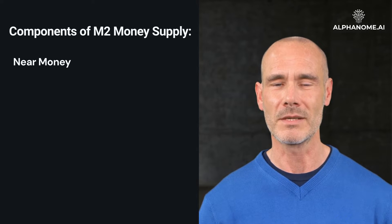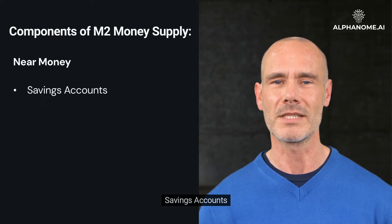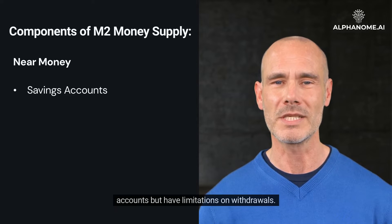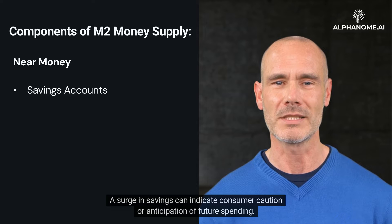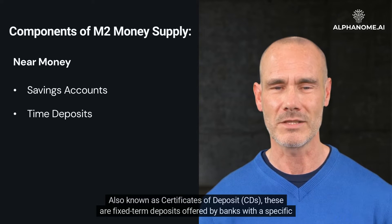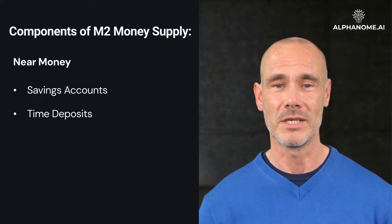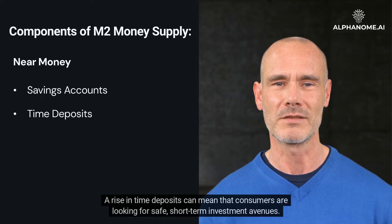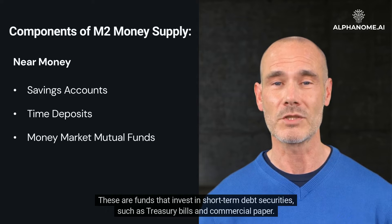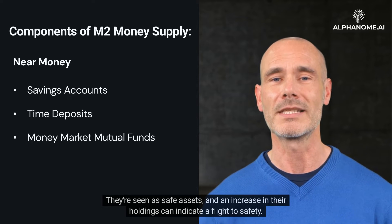Near money refers to financial assets that can be quickly converted into cash or are near-cash assets, including savings accounts — interest-bearing deposits that generally offer a higher interest rate than checking accounts but have limitations on withdrawals. A surge in savings can indicate consumer caution or anticipation of future spending. Time deposits, also known as certificates of deposit (CDs), are fixed-term deposits offered by banks with a specific maturity date; a rise in these can mean consumers are looking for safe, short-term investment avenues. Money market mutual funds invest in short-term debt securities such as treasury bills and commercial paper; they are seen as safe assets, and an increase in their holdings can indicate a flight to safety.